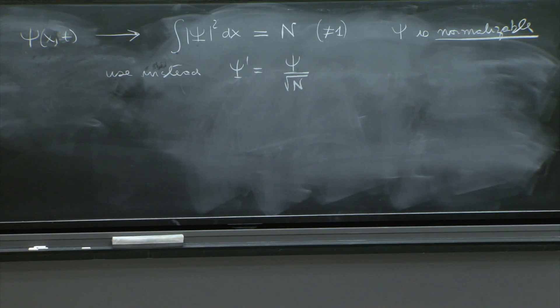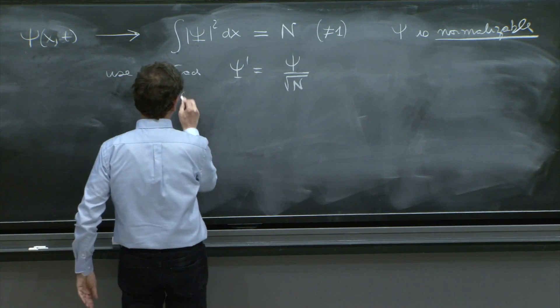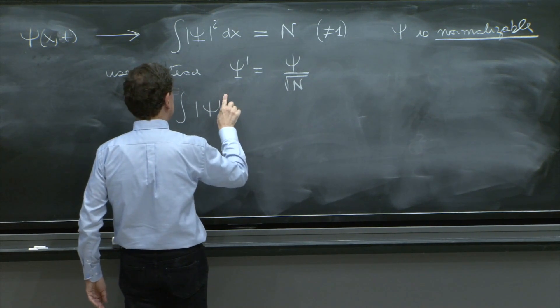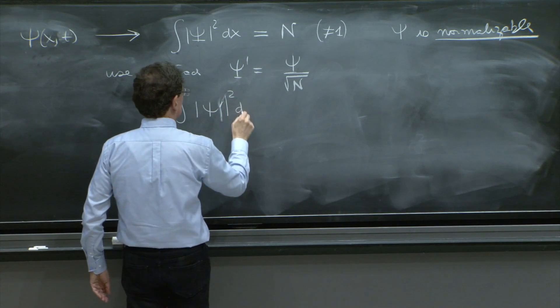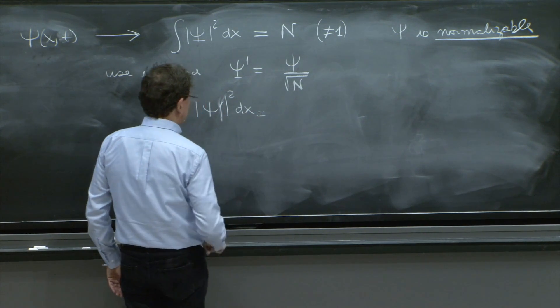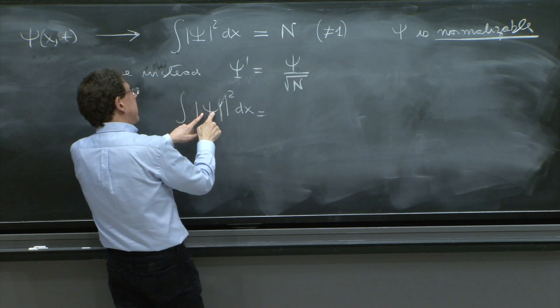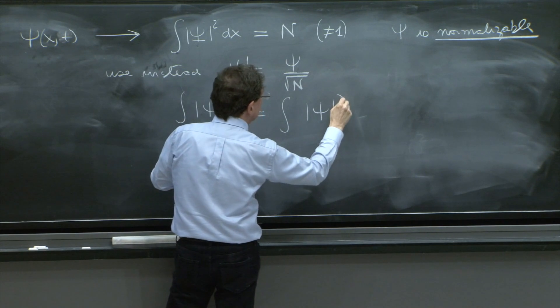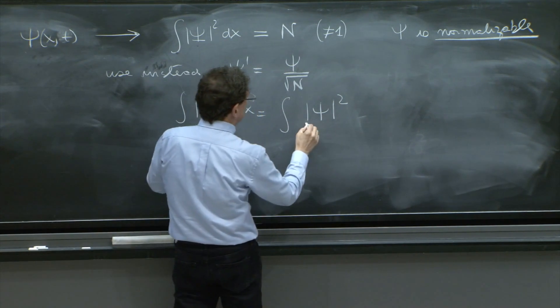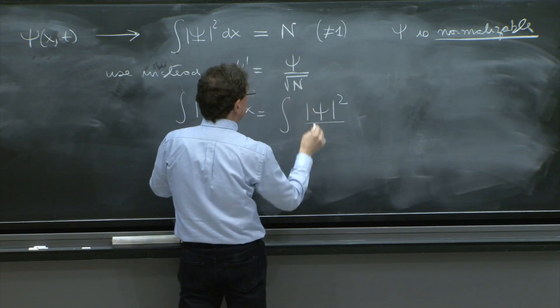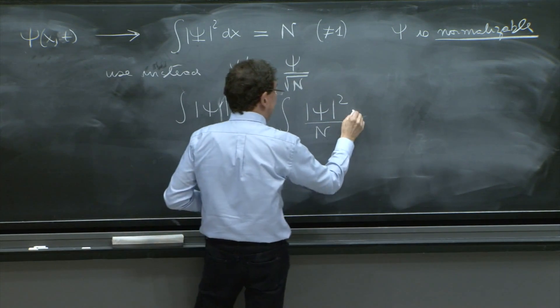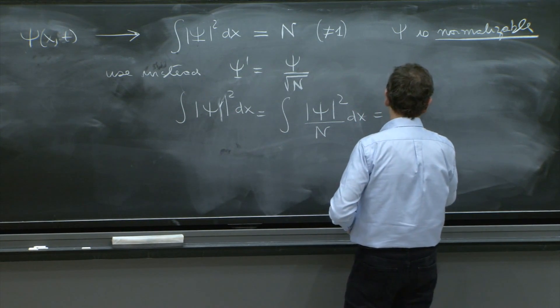And look what a nice property this psi prime has. If you integrate psi prime squared, it would be equal to the integral of psi squared divided by the number N, because you have psi prime squared - it's two of them - dx.